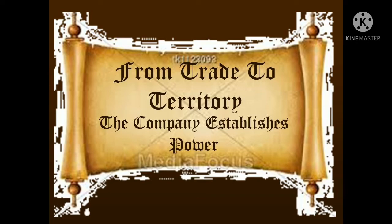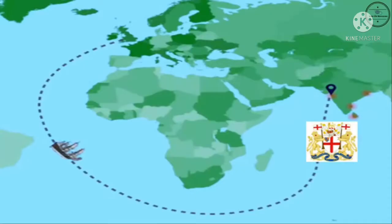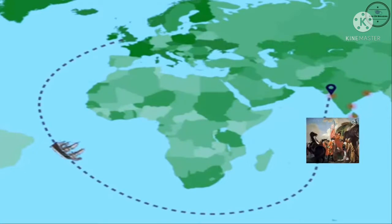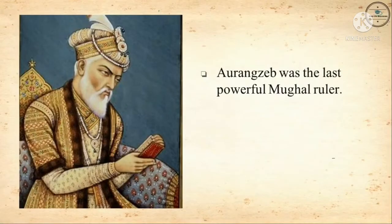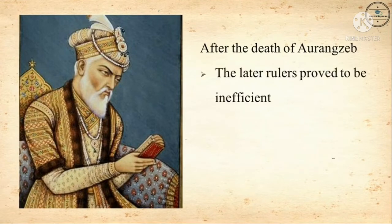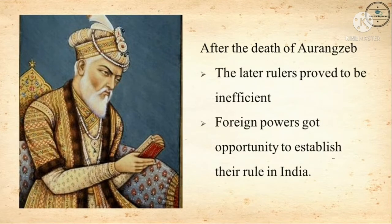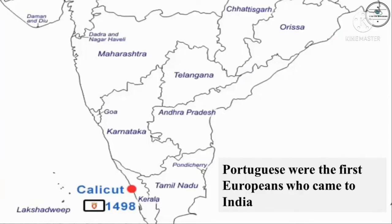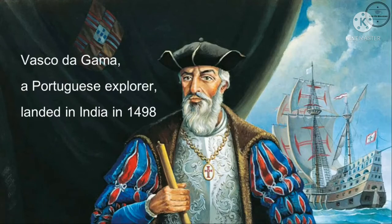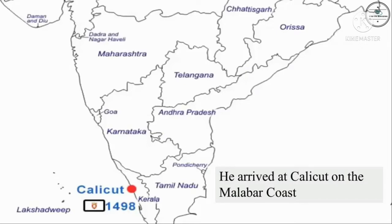Now let's revise the second chapter: 'From Trade to Territory — The Company Establishes Power.' The British originally came as a small trading company who were reluctant to acquire territories. But how then did they come to be masters of a vast empire? Aurangzeb was the last powerful Mughal ruler. After his death, the later rulers proved to be insufficient, and foreign powers got the opportunity to establish their rule in India. The Portuguese were the first Europeans who came to India. Vasco da Gama, the Portuguese explorer, landed in India in 1498 and arrived at Calicut on the Malabar coast.